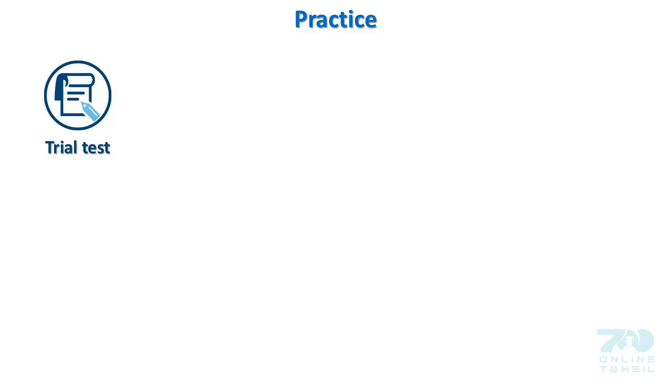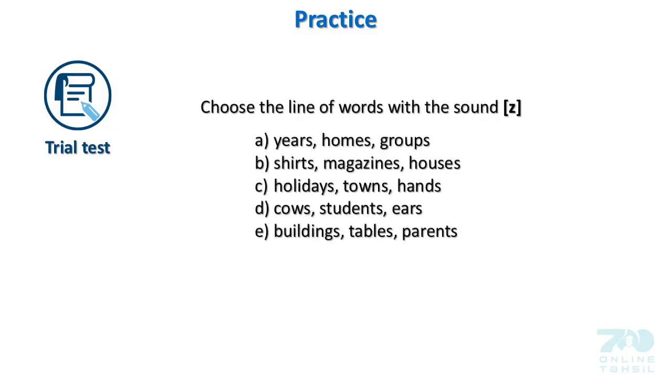Let's have some trial test now. You have to choose the right answer. Choose the line of words with the sound Z: A) years, homes, groups; B) shirts, magazines, houses; C) holidays, towns, hands; D) cows, students, years; E) buildings, tables, parents. The answer is E: buildings, tables, parents.